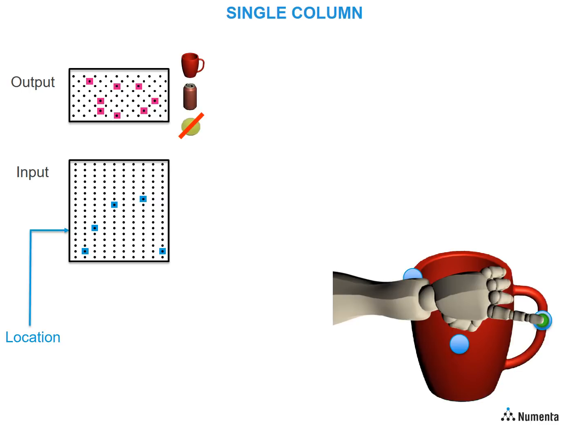At the third location, it goes through the same process, and now the output recognizes the cup, as shown by the unique representation at the output layer.